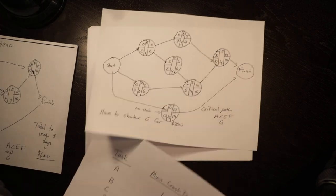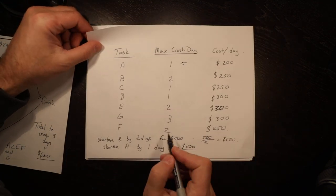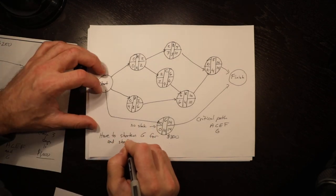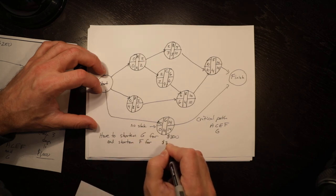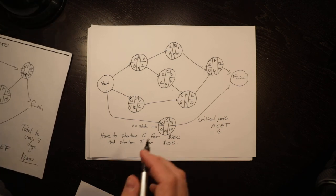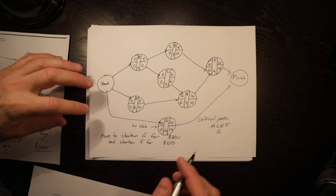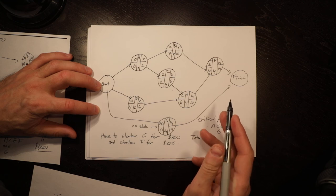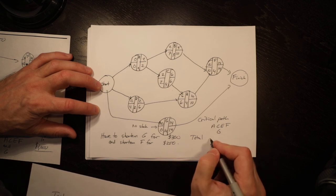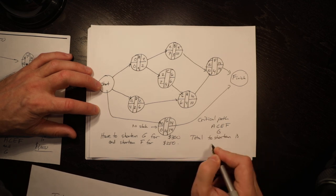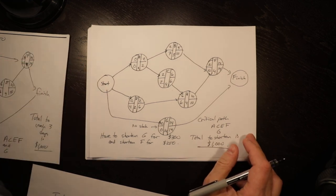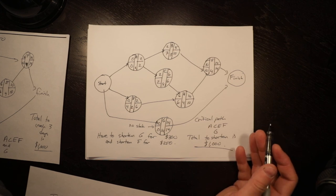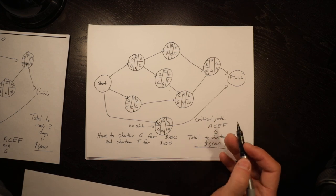We go back here and we can shorten F by two days. So we could choose F again and shorten F for $250. The total to shorten is $1000, that is the incentive you were provided. So in this circumstance, if you were inclined to shorten it for the incentive, you wouldn't make any money at that shortening, but you wouldn't lose any money. So you'd probably say yes.